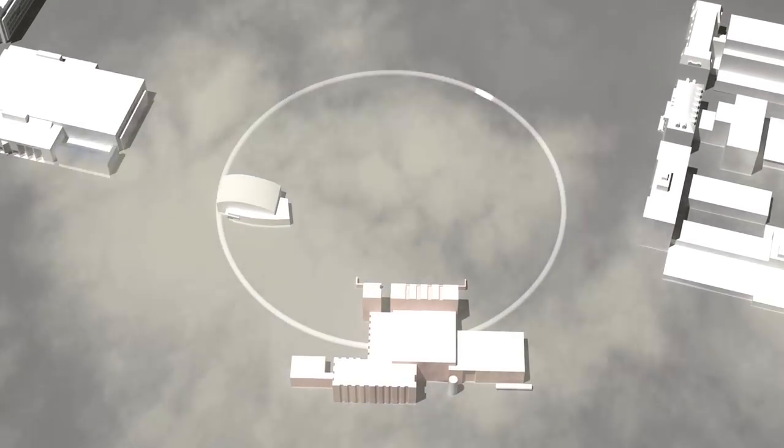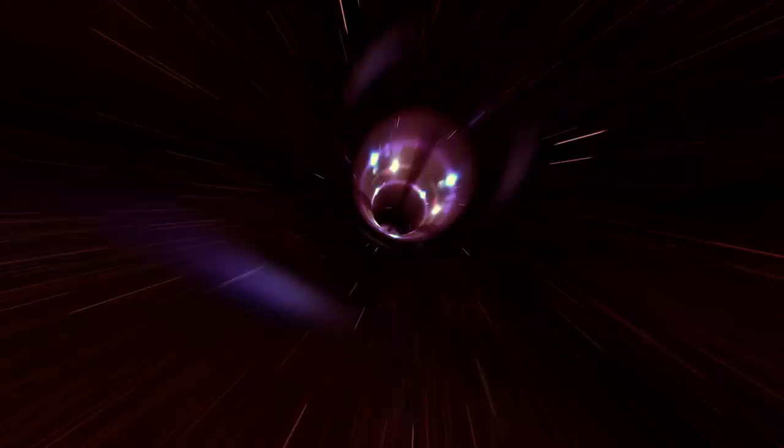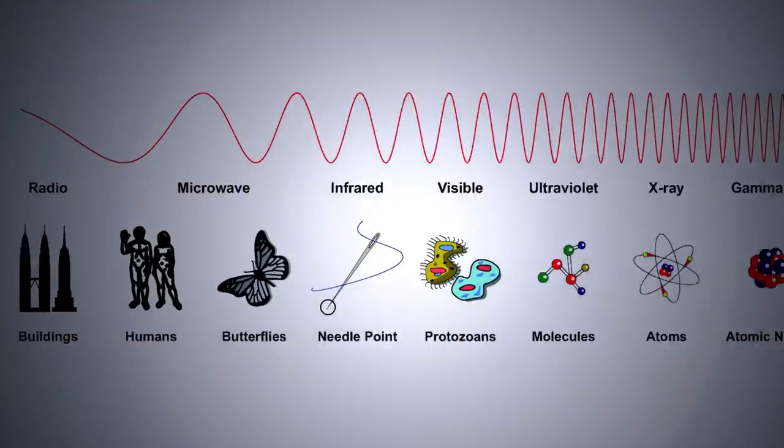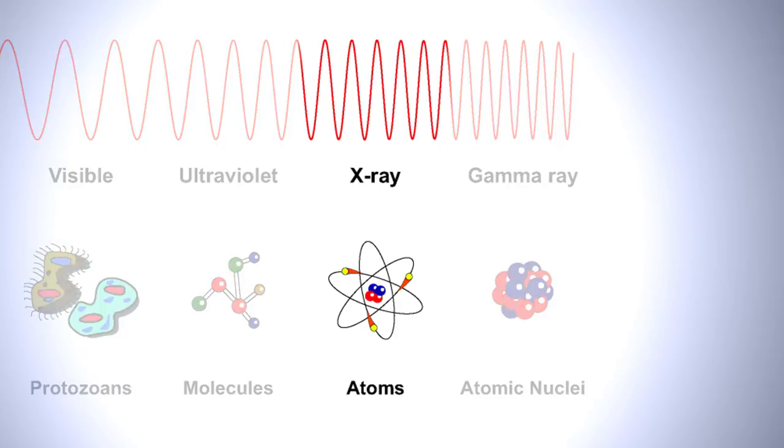The accelerator complex creates electron and positron particles and accelerates them to near the speed of light. Initially designed to smash these particles together, it is now finely tuned to generate an intense beam of light used to study matter at the atomic scale. This light is called synchrotron radiation.